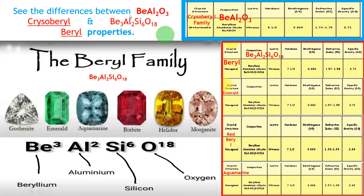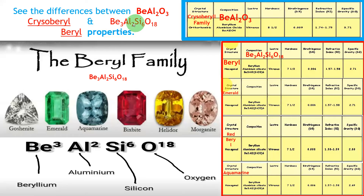We learned this in part 1 also. Remember the difference between chrysoberyl and beryl properties. Chrysoberyl is beryllium aluminum oxide — BeAl2O3. Beryl is beryllium aluminum silicate. In chrysoberyl, there is beryllium, aluminum, and oxygen. In beryl, beryllium, aluminum, and oxygen are also present, but together with silicon. That is the difference.